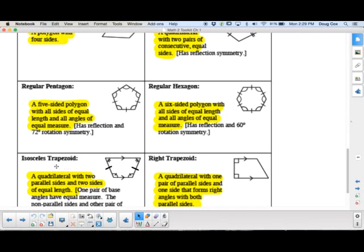To the left here, we have the isosceles trapezoid. And that's a quadrilateral with two parallel sides. So in this case, that's the top and the bottom are parallel to each other. And then it has two sides of equal length. That's the left and the right side here. And then there's some other things that are true, too. Like there's a pair of base angles that happen to be equal measure.